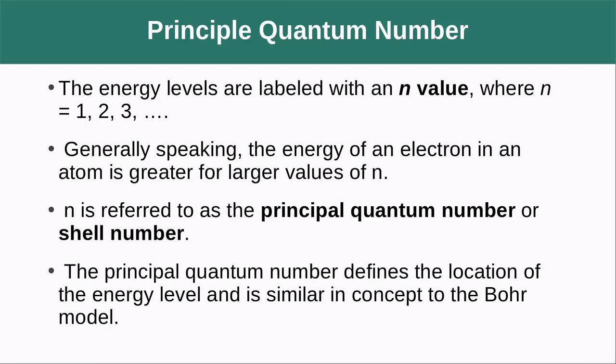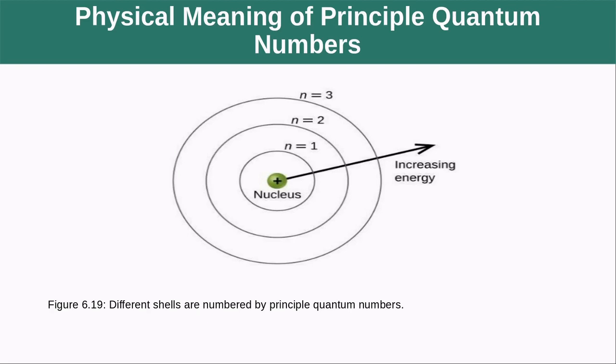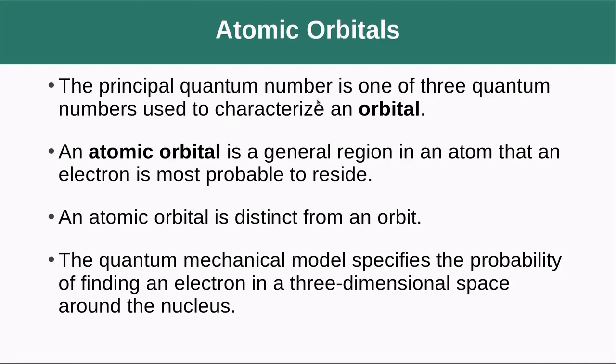Energy levels are labeled with an n value, where n is some integer. Generally speaking, the energy of an electron in an atom is greater for larger values of n, usually meaning the electron is further from the nucleus. n is the principal quantum number or shell number, defining the location of the energy level, similar in concept to the Bohr model. You can see as n goes up, you're getting further from the nucleus.